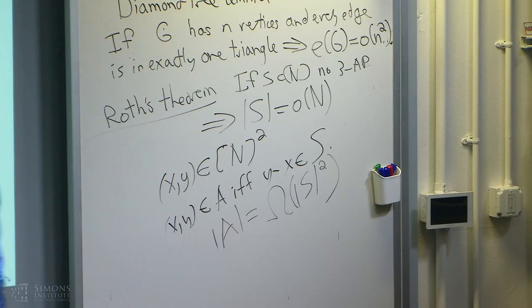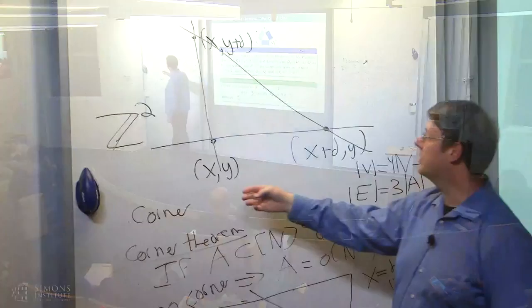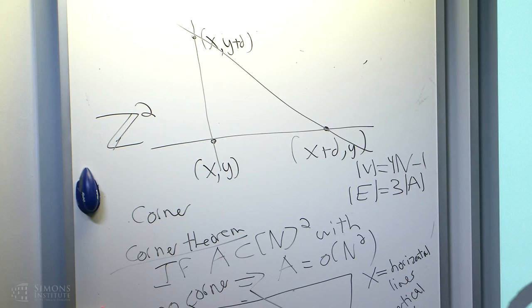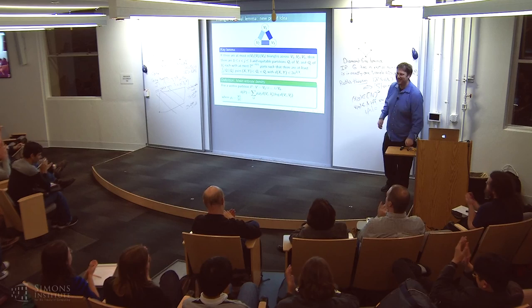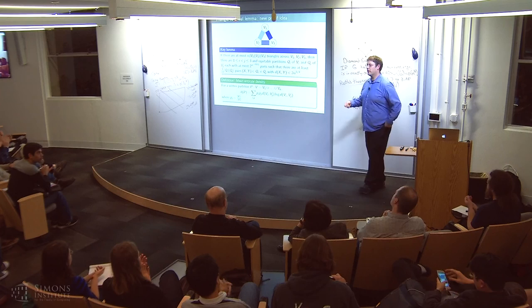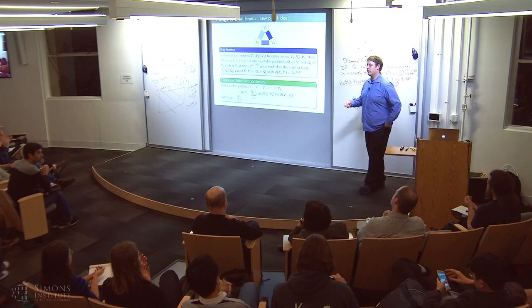The corners theorem has a generalization: instead of a corner, you can find a homothetic copy of any configuration in any dense subset of Z². There are much more general theorems than that, though they're still very hard to prove. Tomorrow I'll go into a lot of applications in computer science — property testing, approximation algorithms, and things of that nature. Thank you.